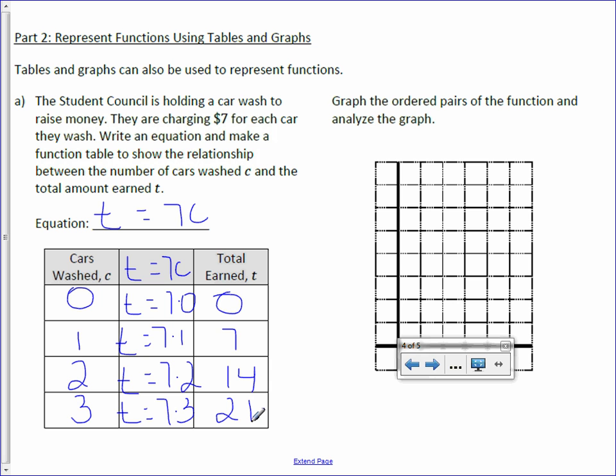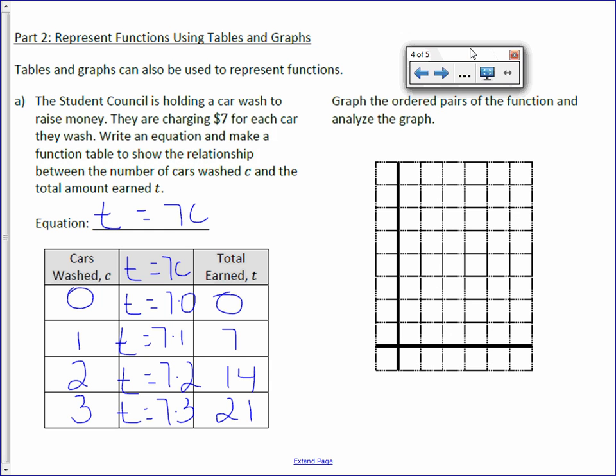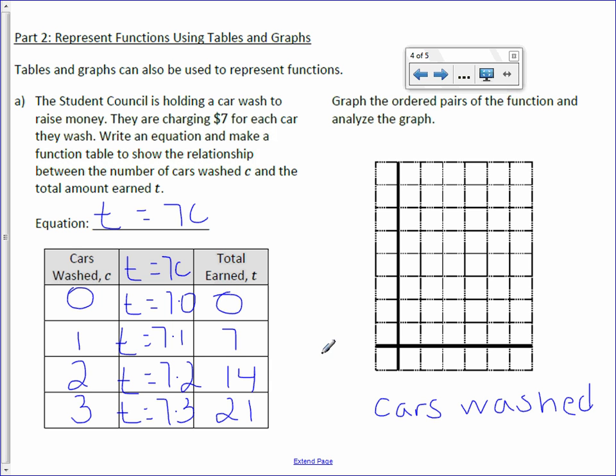Graph the ordered pairs of the function and analyze the graph. Before we can graph them, what we need to do is label everything. Our independent variable, normally our X value, goes on the bottom axis. In this case, we don't have X, but our independent variable would be the cars washed or our variable C. Which means on the left-hand side, this would be our total earned.